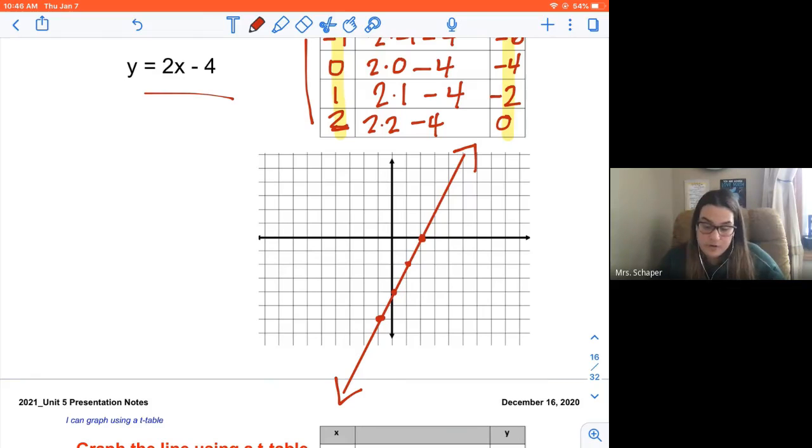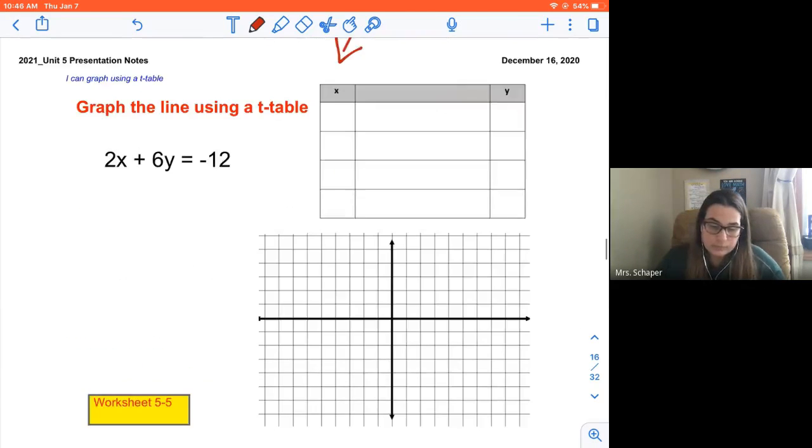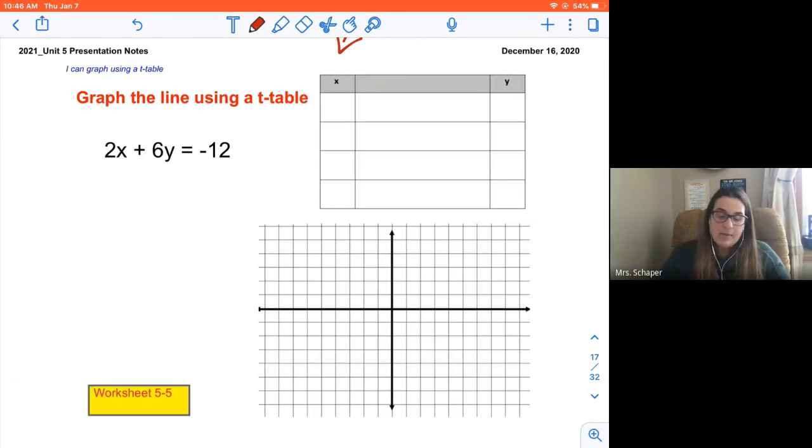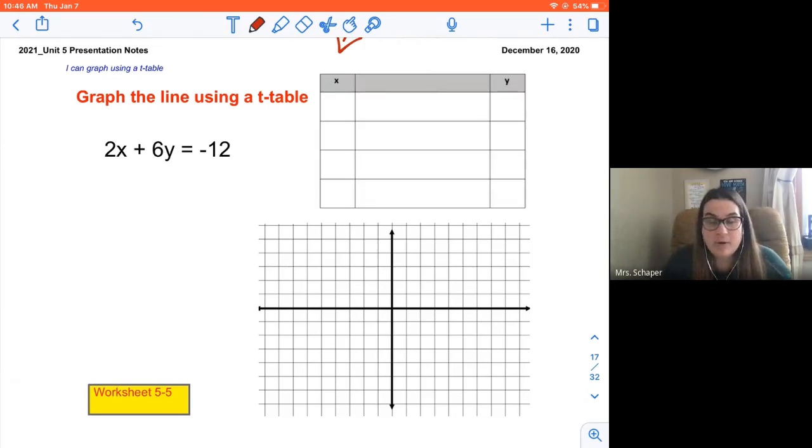I've got one more example for you, and then it's going to be some work time. Here's my equation. I'm going to use the line to create a t-table. In order to use a t-table, it has to be written as y equals. We practiced in previous units rewriting equations so y is by itself. My whole goal is to get y by itself, so I'm going to subtract 2x from both sides.